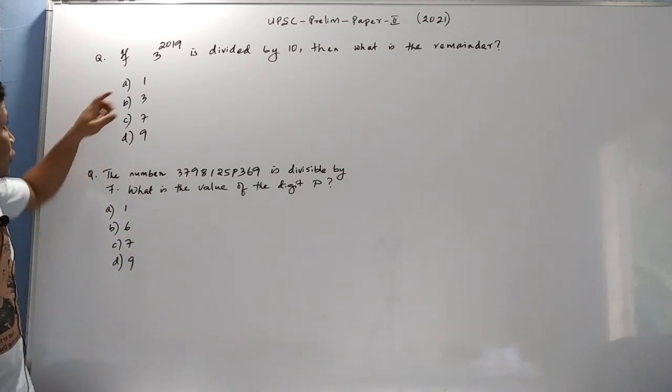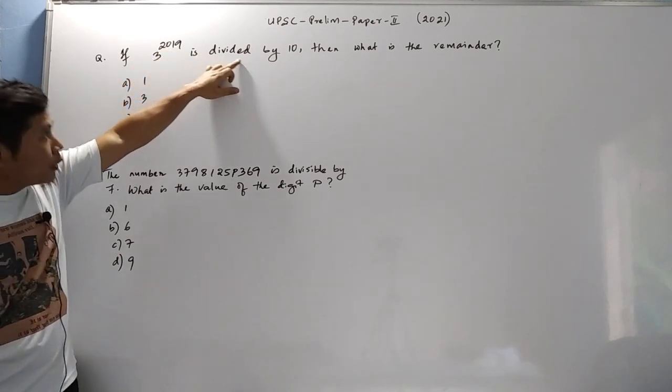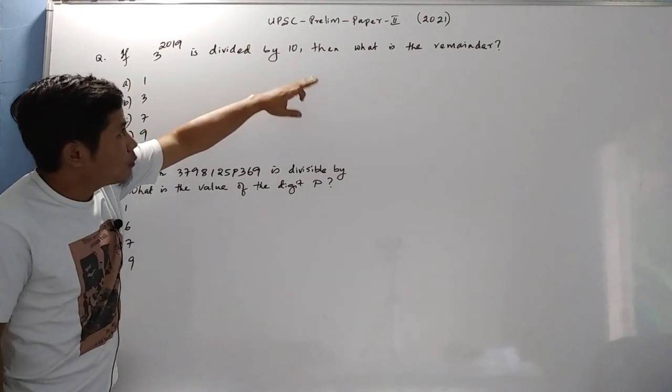Let us see the first question. 3 to the power 2019, when divided by 10, what is the remainder?